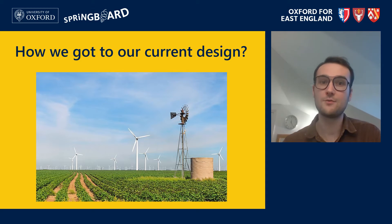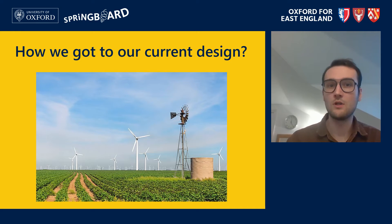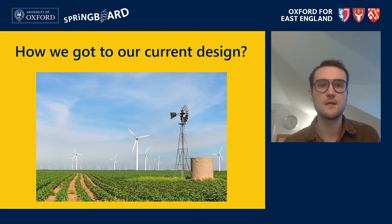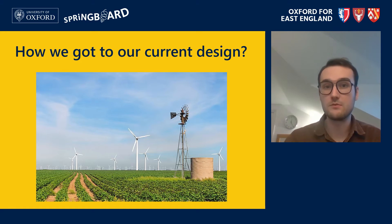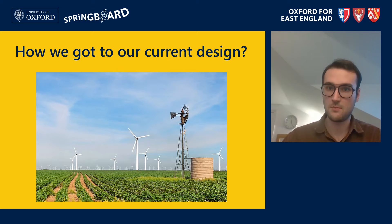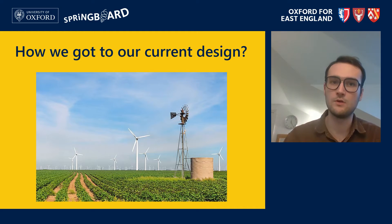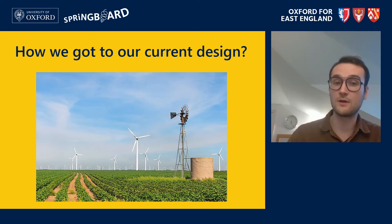Why three blades and not four like historic Dutch windmills, or more? It comes down to drag. The more blades, the more surfaces, and the drag will increase, which we don't want. So we try to minimise the blades. However, we don't want only one or two blades because that would make the turbine unbalanced and unstable as it turns and moves to face incoming wind. So the smallest stable number for us is three.